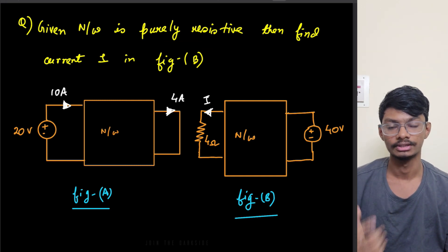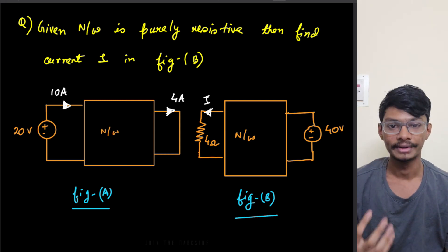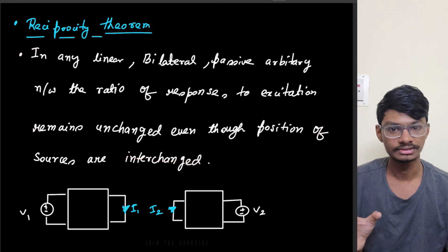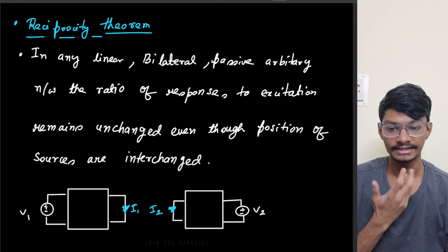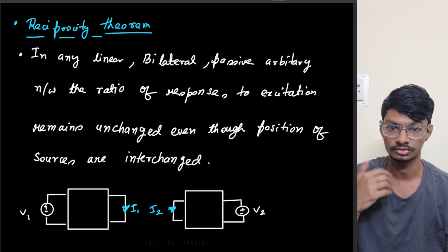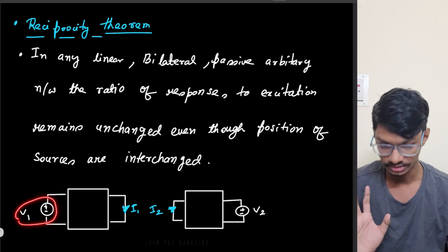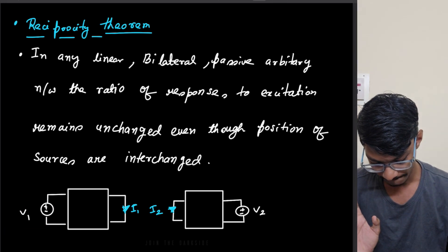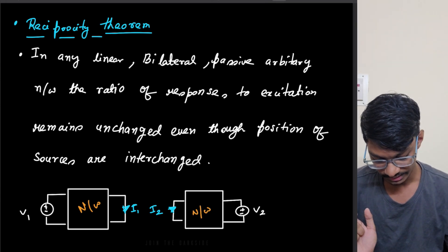When a network is purely resistive, the network will be reciprocal. The reciprocity theorem states that in any linear bilateral passive network, the ratio of response to excitation remains unchanged even though the position of the source and the excitation are interchanged. So basically we have one voltage source exciting this network, and the network is reciprocal.